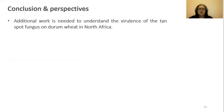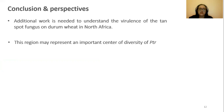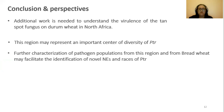As a conclusion, additional work is needed to understand the virulence of the tan spot fungus on durum wheat in North Africa. This is due to the identification of a large number of atypical isolates combined with the differentiation of PTR populations based on their geographical origin and capacity to produce the necrotrophic effector PTR ToxB. This region may represent an important center of diversity of PTR. Further characterization of pathogen populations from this region and from bread wheat may facilitate the identification of novel necrotrophic effectors as well as races of PTR.